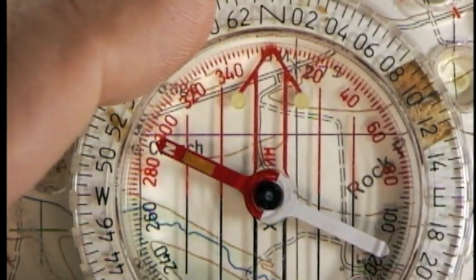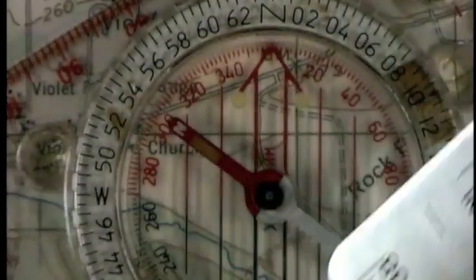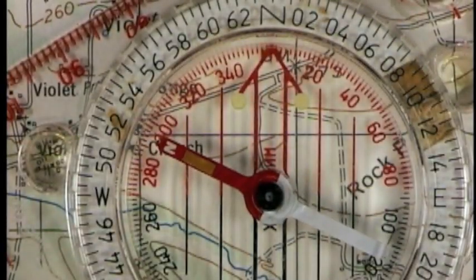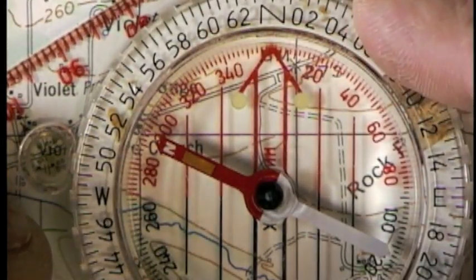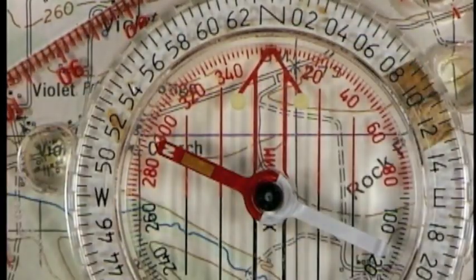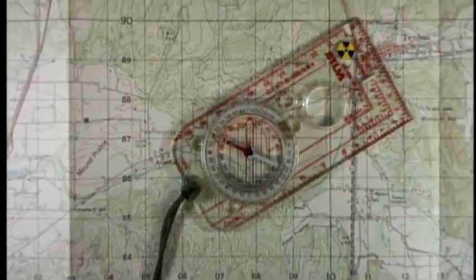Also notice that there are numerous lines in the middle of the capsule. That is so you can make it easier to align with the north lines on the map. Any case, that is all there is to plotting a course on a map.